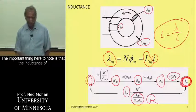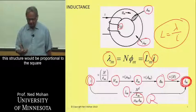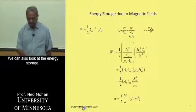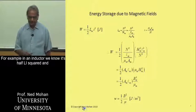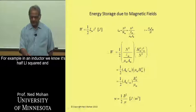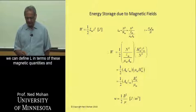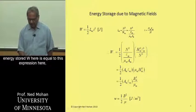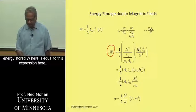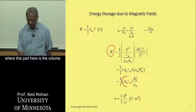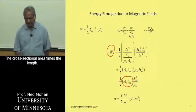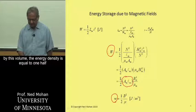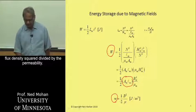The important thing to note is that the inductance of the structure is proportional to the square of the number of turns. We can also look at energy storage — in an inductor it's one-half L I squared. Defining L in terms of magnetic quantities and I from Ampere's law, the energy stored W equals an expression where one part is the volume (cross-sectional area times length). So the energy density equals one-half flux density squared divided by the permeability.